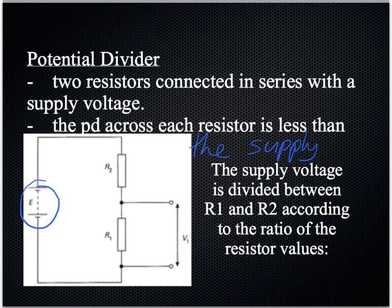our power supply. This symbol E just stands for EMF, which is another way of saying the energy supplied by the cell. Now that's going to be divided up by these two resistors, as we've seen with series circuits. And we're going to look at this particular potential difference, V1, which is across R1 in the circuit.